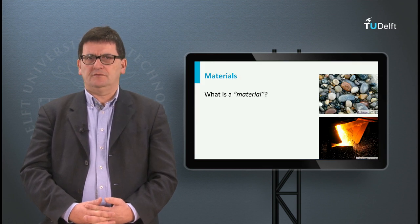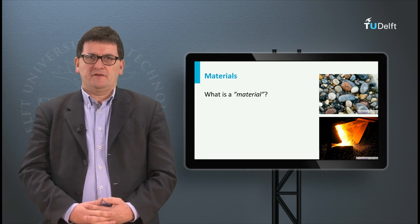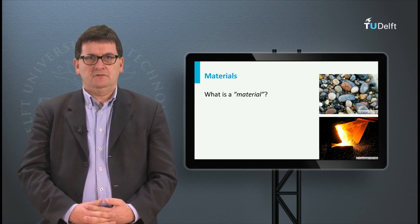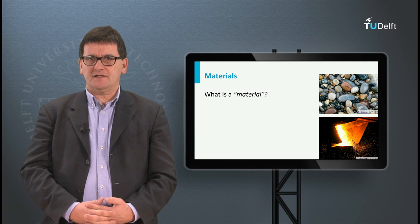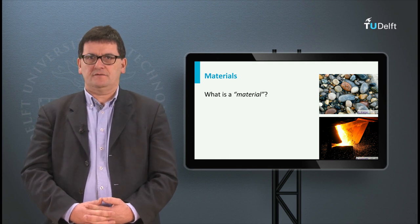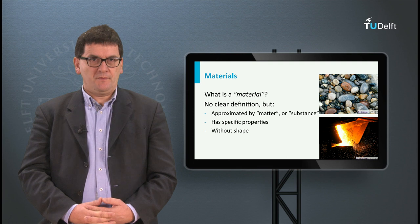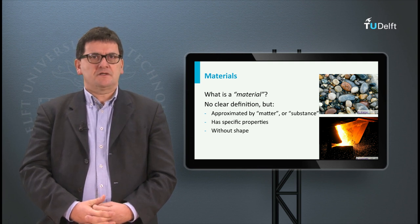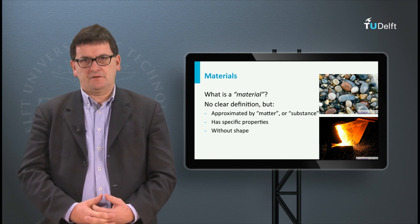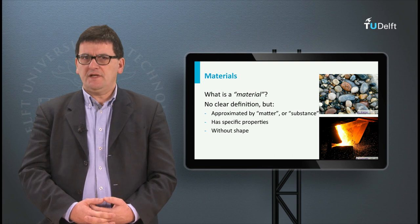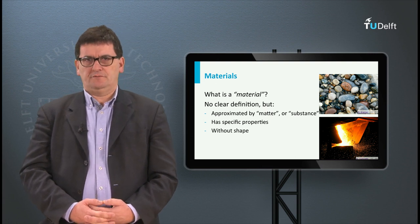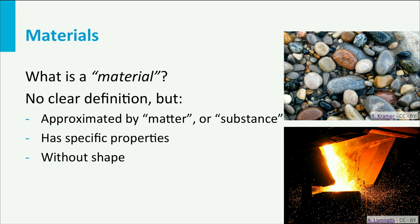To start with, what is a material? Although everybody understands what is meant with the material, it is very hard to give a nice and clear definition. Words like matter or substance pop up, although these words are not 100% spot on. So often we need to describe the word material. A material has properties, and these properties are independent of its size and shape. So a material has many mechanical, physical and chemical properties.